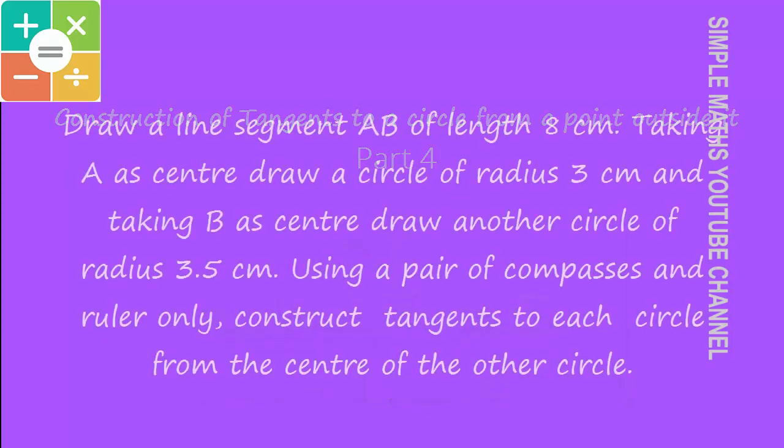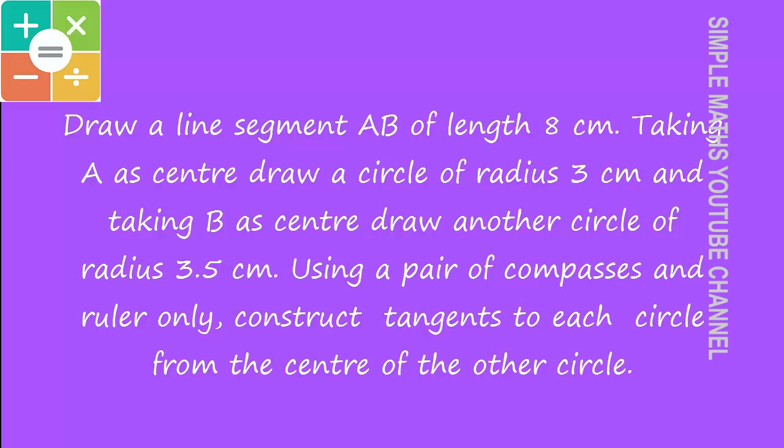Read this question. Draw a line segment AB of length 8cm, taking A as center, draw a circle of radius 3cm and taking B as center, draw another circle of radius 3.5cm. Using pair of compasses, singularly construct tangent to each circle from the center of other circle.